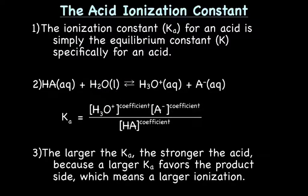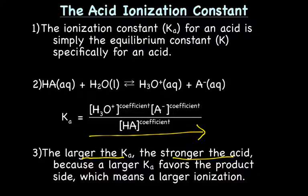So the larger the Ka, the stronger the acid. Why would that be? Well remember, thinking about equilibrium constant, a larger K favors the product side, meaning it's going this way, which means greater ionization. More of this means you're going to have a stronger acid. So the larger the Ka, the stronger the acid because a larger Ka favors the product side, which means larger ionization.